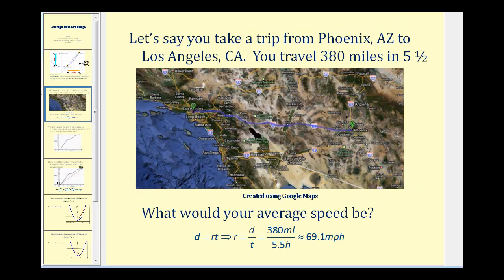To get a better feel for average rate of change, let's say you take a trip from Phoenix, Arizona to Los Angeles, California, and you travel the 380-mile trip in 5½ hours. We know from algebra that distance equals rate times time. So if we solve for rate, we get rate equals distance divided by time — and this represents an average rate. Taking the distance divided by the time, our average speed on this trip would be approximately 69 miles per hour.